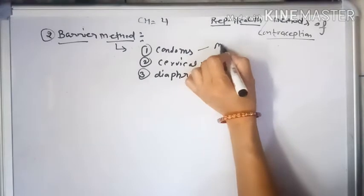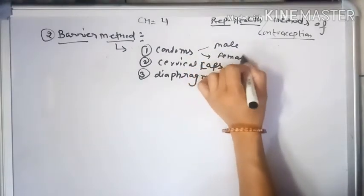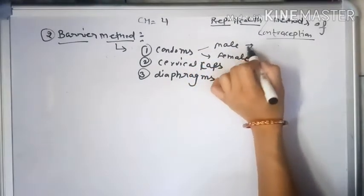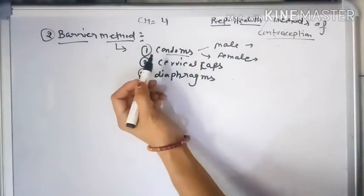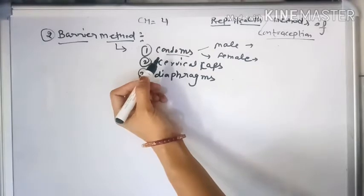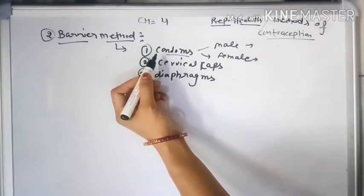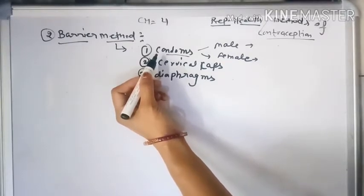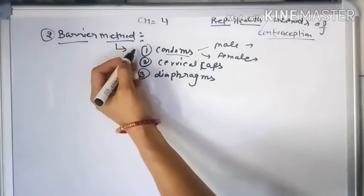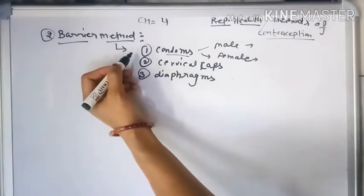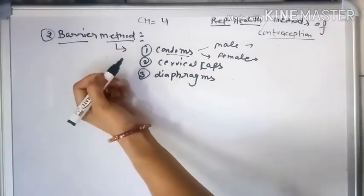Condoms are available for both males and females. They are used during sexual intercourse as a protective method, providing protection to both partners. These condoms do provide protection and are also a very economical procedure.